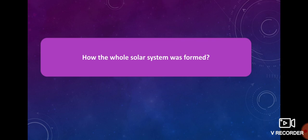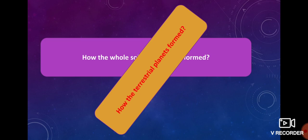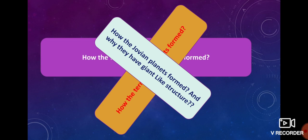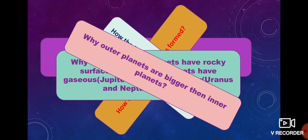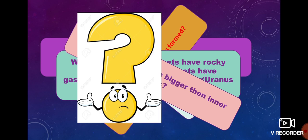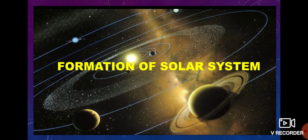So how was the whole solar system formed? How were the terrestrial planets formed? How were all the Jovian planets formed, and why do they have a giant-like structure? Why do terrestrial planets have a rocky surface while Jovian planets have a gaseous or icy surface? Why are the outer planets bigger than the inner planets? There are lots of questions, and now I am coming to my actual topic: the formation of the solar system.